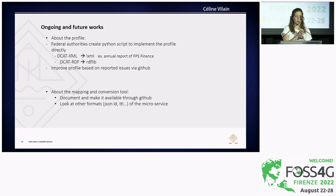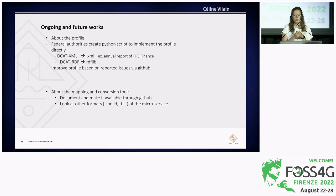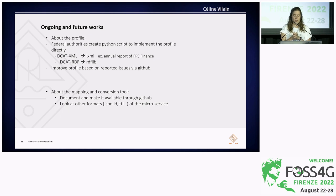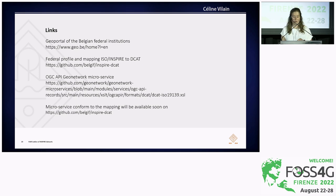This project is not finished. About the profile: some federal authorities are creating Python scripts to create directly a DCAT-AP output from the Python script. Some are working with DCAT XML as output, others with DCAT RDF. We also want to improve our profile based on reported issues on GitHub. About mapping and the conversion tool: we need to document it and make it available through GitHub. We know the microservice can convert to other formats beyond just DCAT-AP, so it could be very nice to look at those other formats as well. Those are all the links used in the presentation: the geoportal of Belgian federal institutions, the federal profile and mapping on GitHub, the forked microservice, and the mapping-compliant microservice, which will be available soon on GitHub.